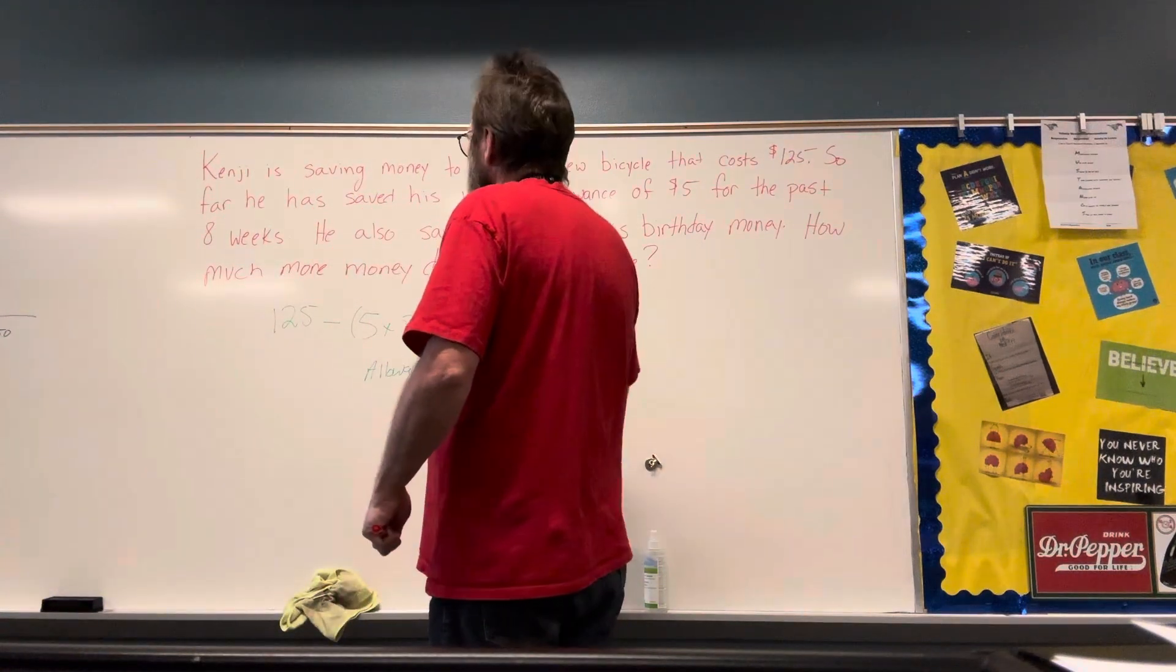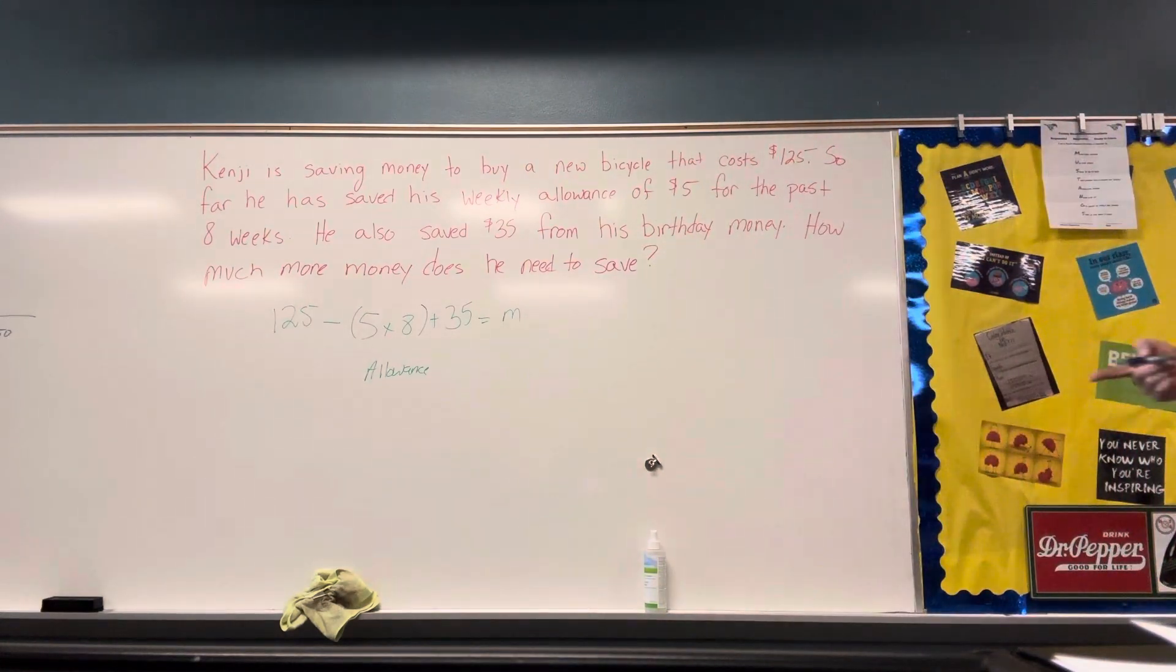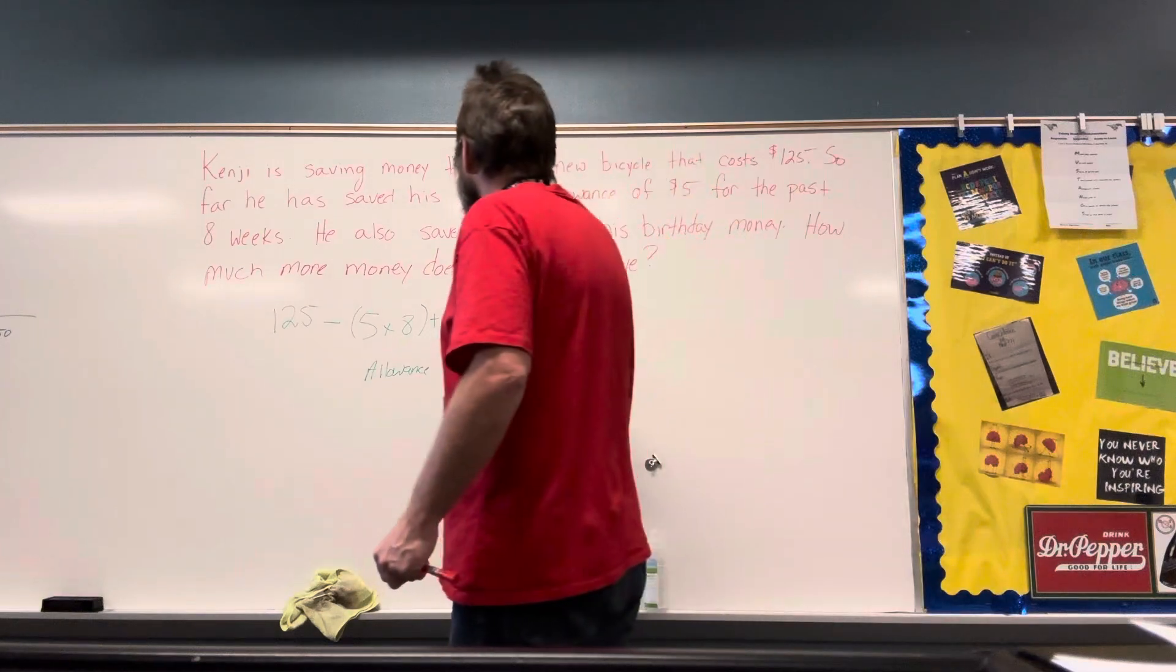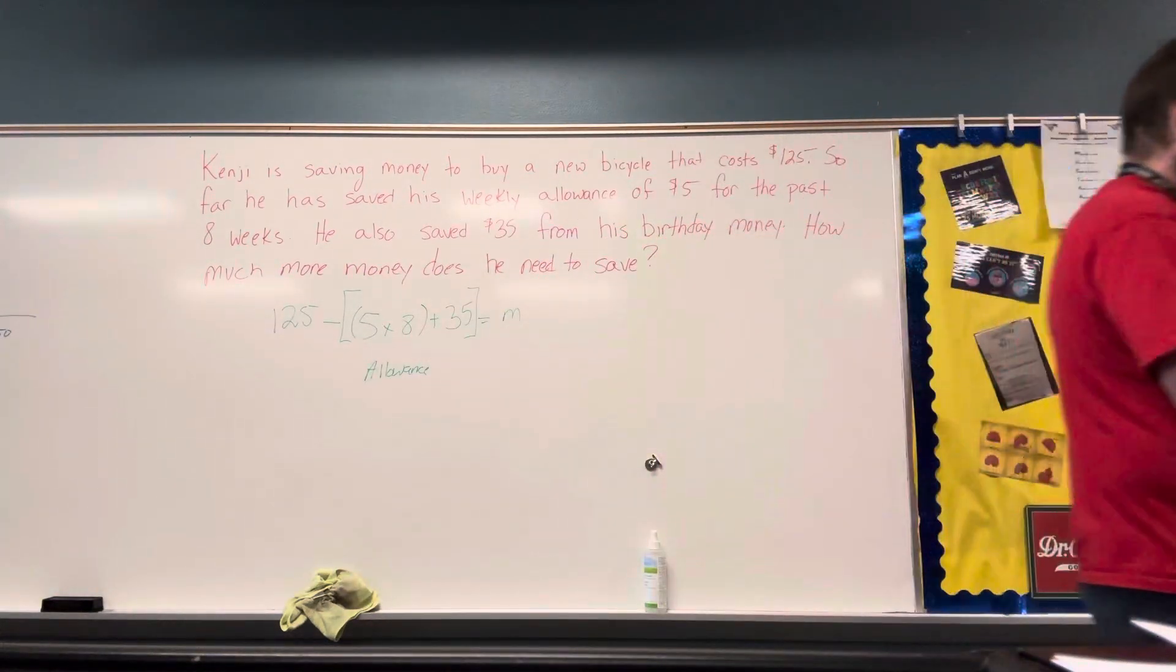That means 125 minus the product of 8 and 5 and this plus 35. So we could write it as an equation, a multi-step equation.